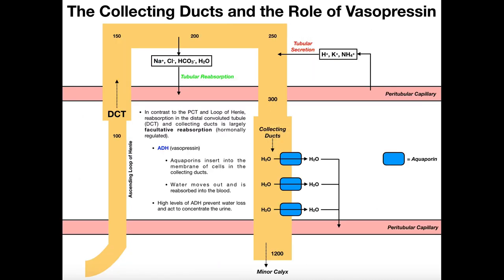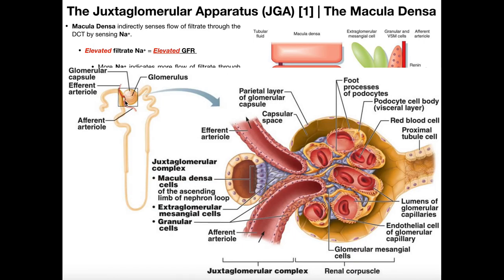But in reality, if we look at this picture, this is more what it looks like. The loop of Henle is all the way down here, but notice the distal convoluted tubule loops back up and actually makes physical contact with the renal corpuscle. There's a region of the distal convoluted tubule — really at the interface between the ascending limb of the loop and the DCT — that region where it makes contact with the renal corpuscle.